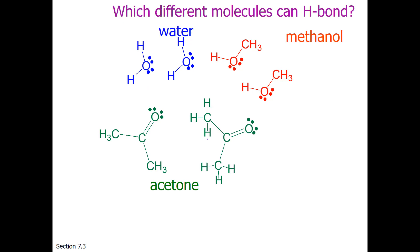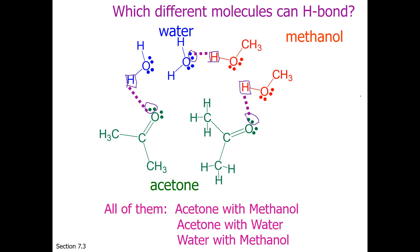Which different molecules can hydrogen bond? Consider water and acetone: water has a hydrogen bound to oxygen, and acetone has a lone pair — we have both pieces, so hydrogen bonding can occur. Methanol to acetone: methanol has a special hydrogen, and acetone has a lone pair on oxygen that is partially negatively charged, so hydrogen bonding can occur. Methanol and water: methanol has a special partially positive hydrogen, and water has the lone pair — so yes, methanol can hydrogen bond with water. All of these combinations work because they have the necessary two pieces.